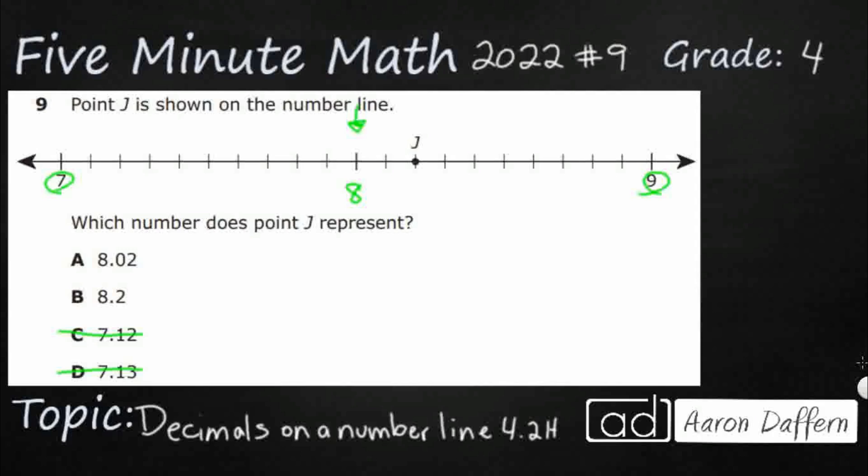I can see where the 2 is coming from because it's two tick marks after the 8. So how do we tell the difference between the two? Well, let's look at our place value.